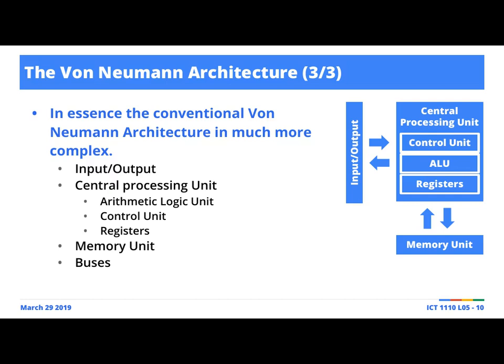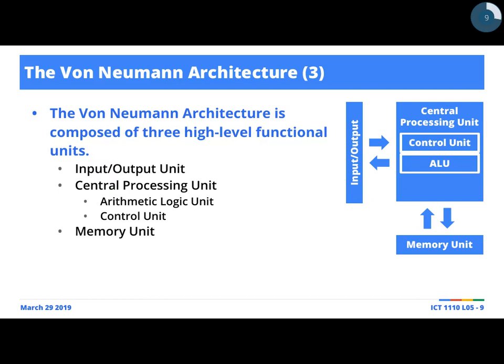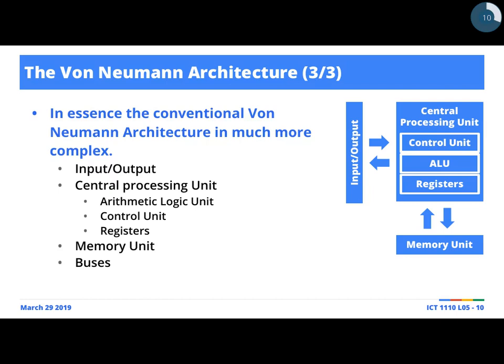The von Neumann architecture is actually more complex than it looks when we say it's made up of four main components. Because these components have to interact — input is accepted and then processed by the CPU — there are things called buses that are required to facilitate this interaction. These buses are nothing more than the wires on the motherboard. Those many wires that connect the different components are what we call buses, and they do nothing more than facilitate the transmission of data and instructions from one component to another.